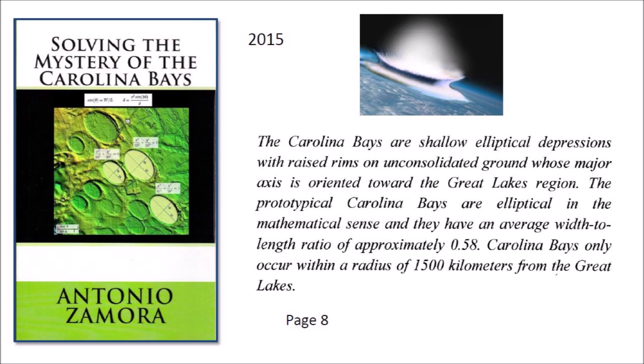Carolina Bays only occur within a radius of 1,500 kilometers from the Great Lakes. The definition emphasizes the elliptical geometry of conic sections, the raised rims characteristic of impact craters, and the radial orientation toward the convergence point of origin at the Great Lakes. The ejecta had a range of about 1,500 kilometers from the impact point, and the width-to-length ratio of approximately 0.58 corresponds to impact angles of about 35 degrees. Carolina Bays are only found in the United States from about the Rocky Mountains to the Atlantic coast.